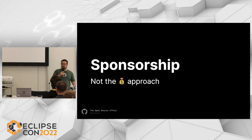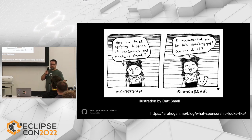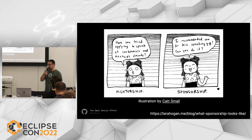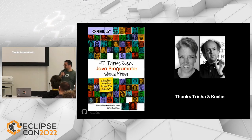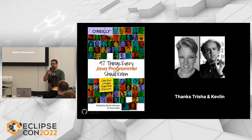Another way to sponsor people is not with money but by using your own connections to promote people. Have you tried applying to speak at conferences or meetups? Rather than encouraging someone to apply, go further — recommend them for the speaking gig directly. Get people into positions where they can accept those opportunities. This is something I highly recommend, from Lara Hogan's blog post about sponsorship and how it fosters team culture. Trisha and Kevlin did this too — they decided to write the book '97 Things Every Java Programmer Should Know' and proactively reached out to potential authors, creating an opportunity for many Java developers to contribute to a book without writing a whole book themselves.